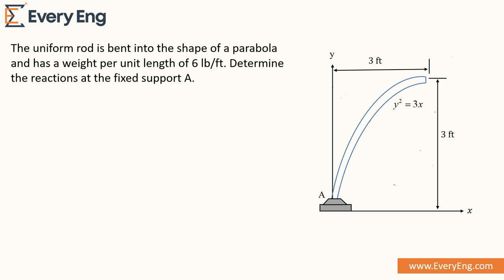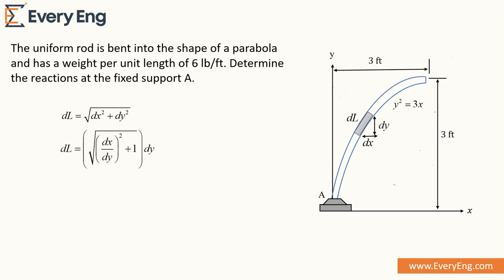To find out the reaction at the fixed support, we need to calculate the weight of the uniform rod. We are considering a small element whose length is dl, whose horizontal thickness is dx and vertical thickness is dy. To find out the length of the small element, we are using the Pythagorean theorem. So dl is equal to the square root of dx² plus dy².